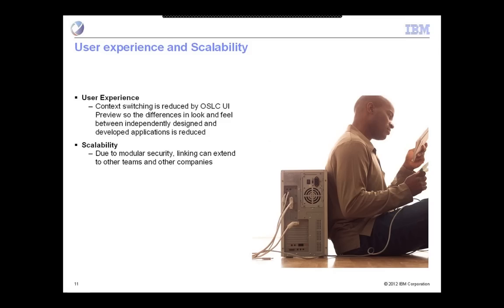One thing I've found is that when you have different systems, you might have a different look and feel to each area. The OSLC UI Preview has proven to really reduce those differences, because when you have a linked record and you put your cursor over it, the data from the other application pops right up in front of you, rendered in the context of the record where you're working right now. This makes it look much more like one unified system, even though each area has been developed independently and just linked.